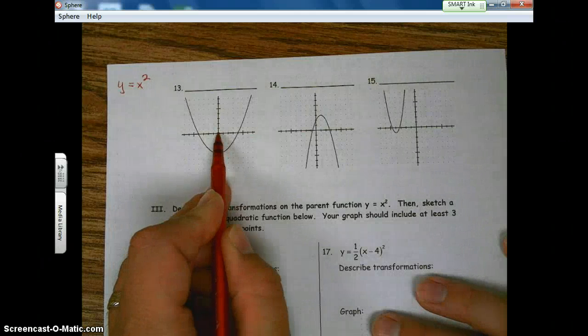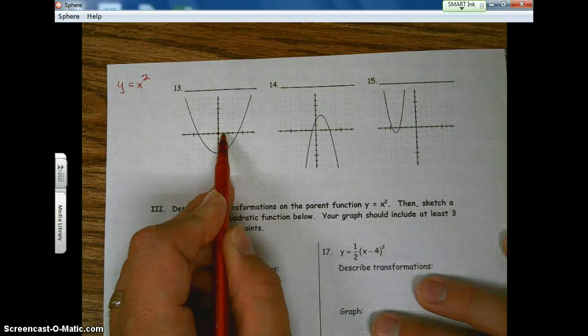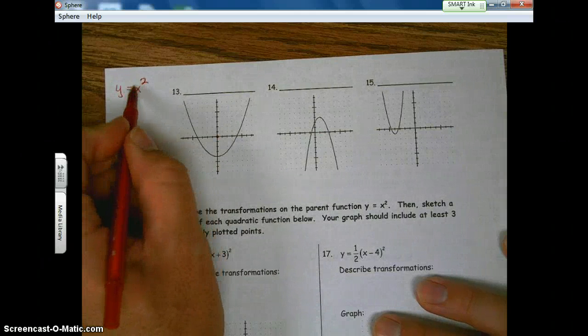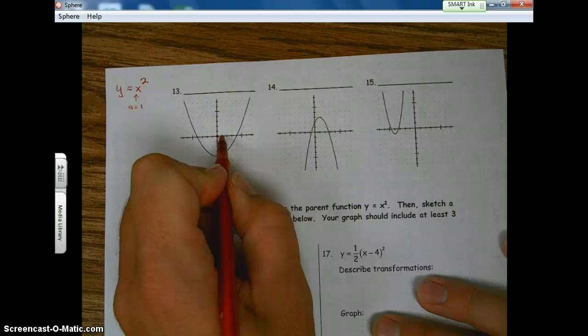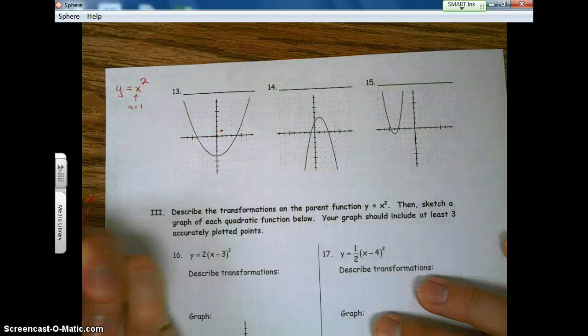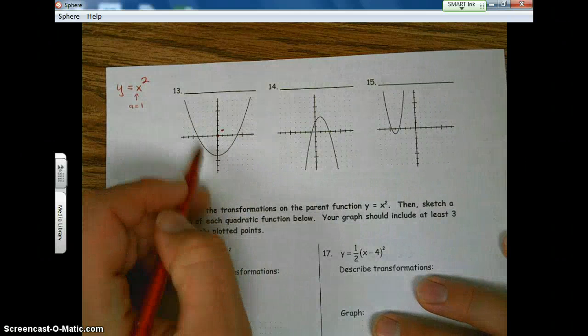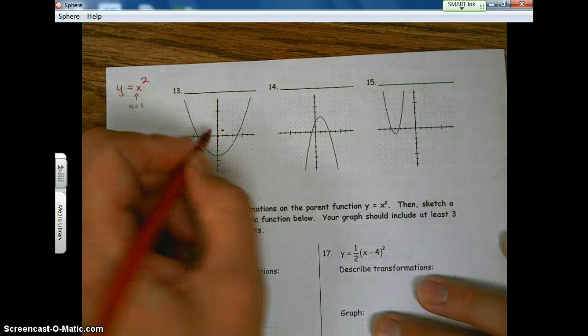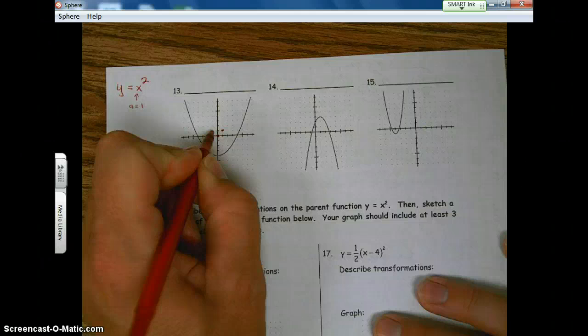And then to get the next point, we go over one unit. And then we look at what is that a value? That a value in this case is one. The a value is one on the parent. So we go over one and then we apply the a value. So we go up one. Now because a parabola is symmetrical, the left side looks just like the right side. If we go over one to the left, then we apply the a value again.